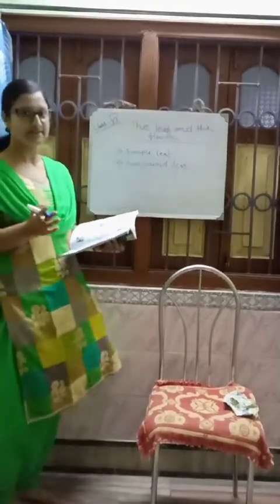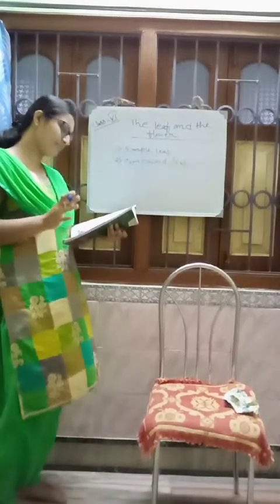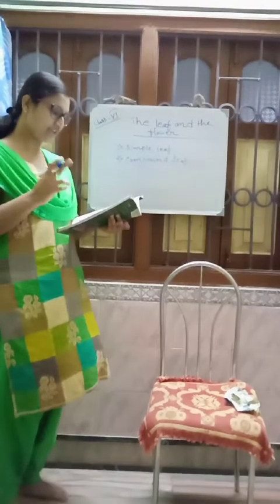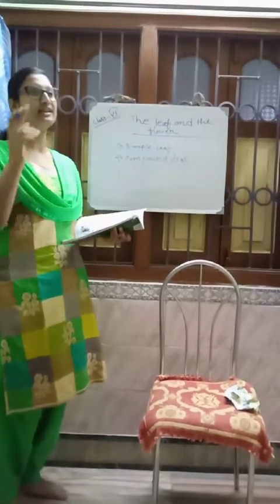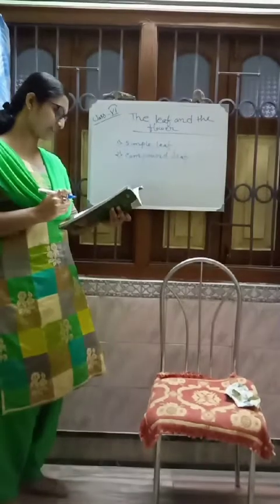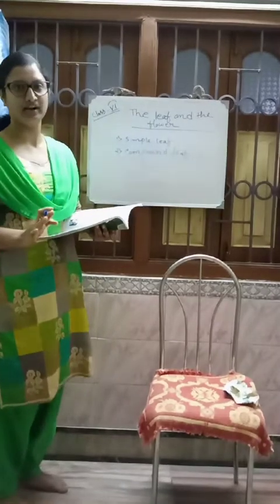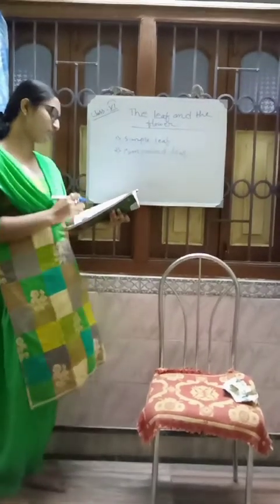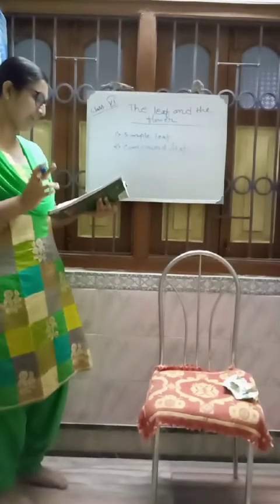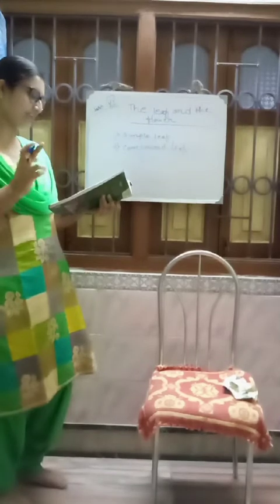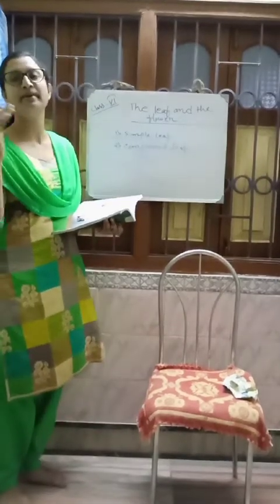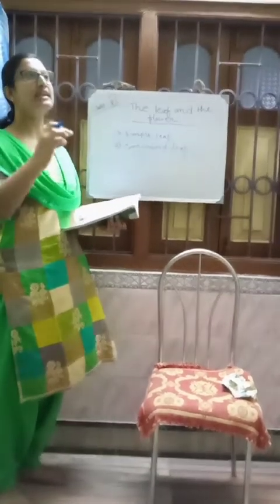The simple leaf is one with an entire, undivided lamina — this is called the simple leaf. Examples of simple leaves are mango and china rose. The compound leaf is one where the lamina is divided such that the division reaches the midrib, forming separate leaflets.